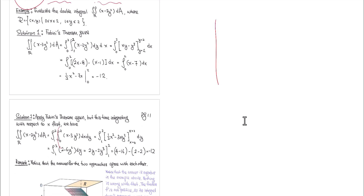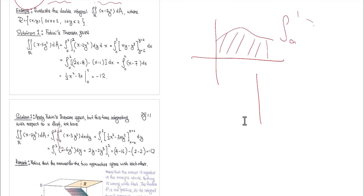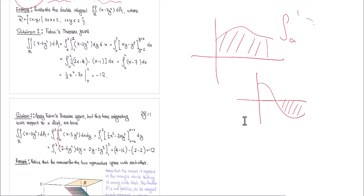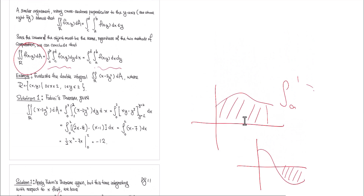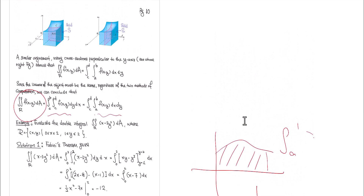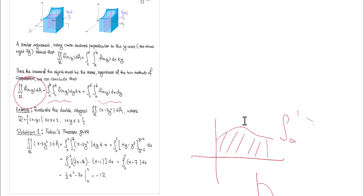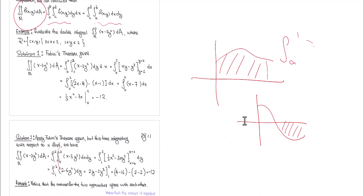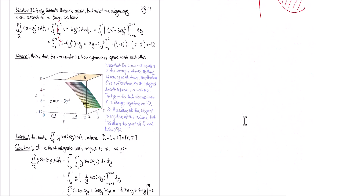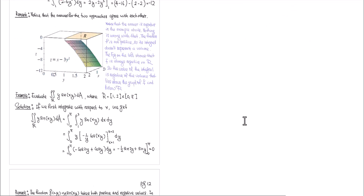Just like area in Calc 1 can be negative when the function dips below the axis, the same applies to volumes. We kept using 'volume' to give you intuition, but f(x,y) is not always positive — it can be negative. So if you compute a double integral and get a negative value, don't be surprised. It's fine.